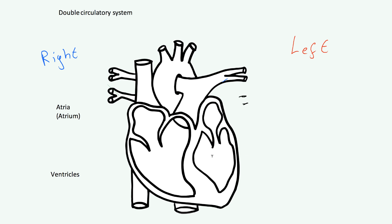Now let me quickly label these tubes — these are blood vessels: arteries, veins, and capillaries, which we'll cover in the next video. The vessel where blood comes in to the right atrium is called the vena cava — it's a very large vein. The right ventricle then pumps the blood to the lungs via a tube called the pulmonary artery.